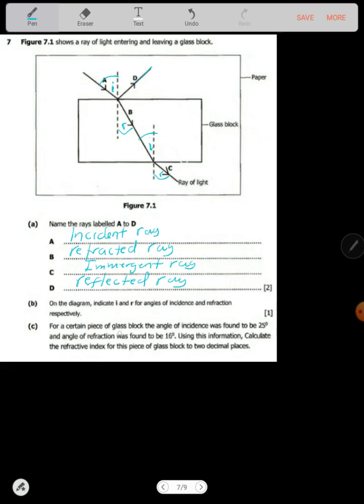Then for a certain piece of glass block, the angle of incidence is found to be 25 degrees. So we have the angle of incidence 25 degrees. And the angle of refraction was found to be 16 degrees. So refraction also found to be 16 degrees. Using this information,